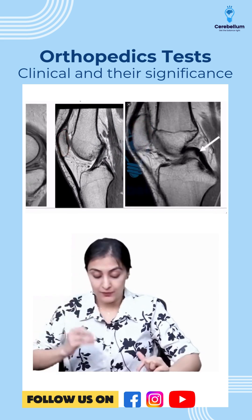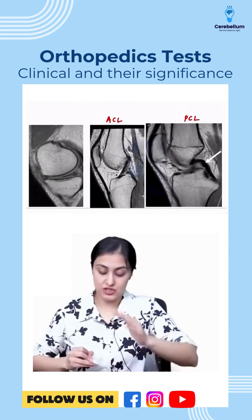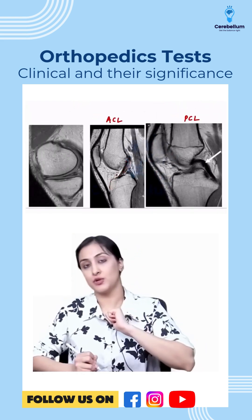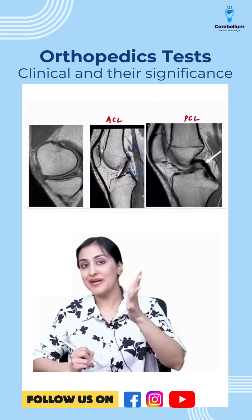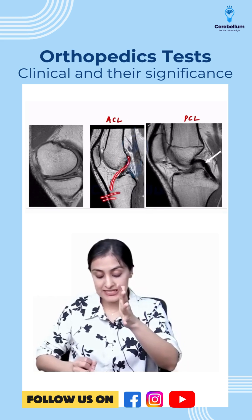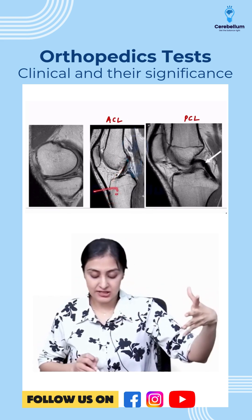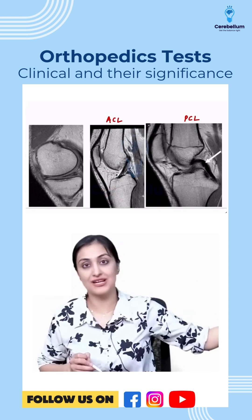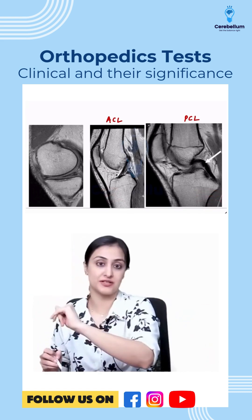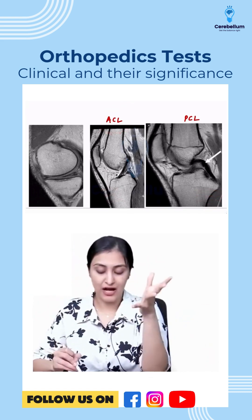You can also remember the function with the help of this: the ACL attaches anteriorly on the tibia, so its main function is to prevent anterior tibial translation — meaning it doesn't allow the tibia to fall out anteriorly. The PCL prevents posterior fall. ACL injury is very, very common — far more common than PCL.